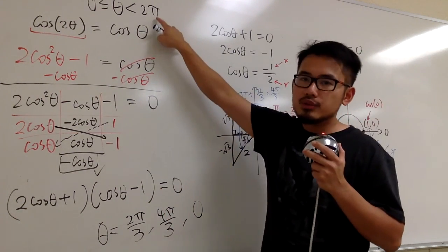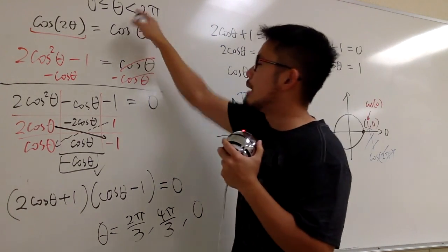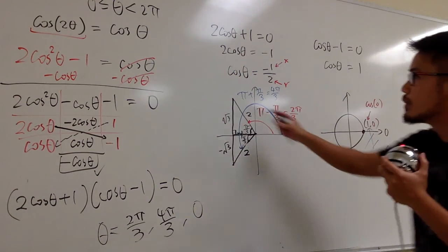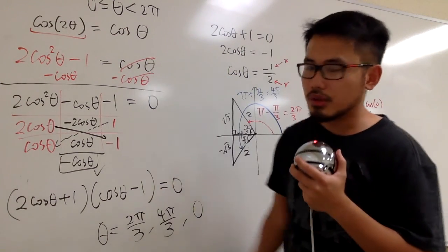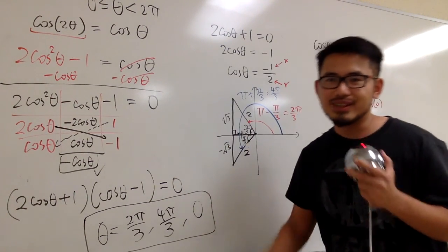And just kind of pay attention to the direction of the question that you're working with. Do you want to include the 2π or not? But in this case, we don't include the 2π because the question says so. So, this right here will be the answers that we are looking for. That's all.